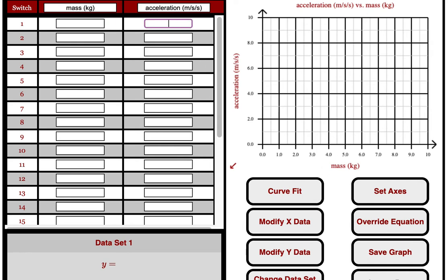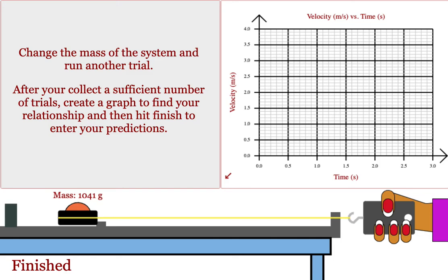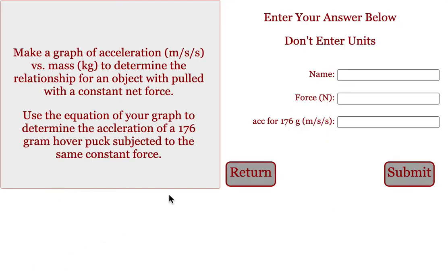When you're done, curve fit it. Get your graph constant. When you're totally finished with your graph, you can click on here. Again, your graph is acceleration versus mass. The mass is in kilograms. The graph constant should be the force that you're using to pull it across the table. So put that in here. And then use your equation to predict the acceleration for a hovercraft that had a mass of 176 grams.